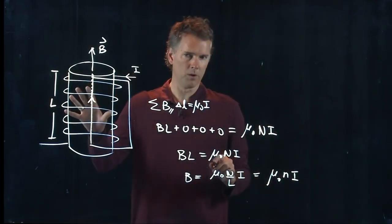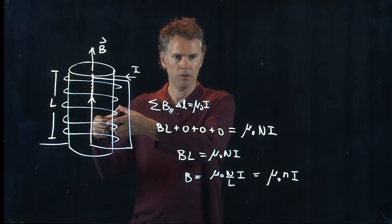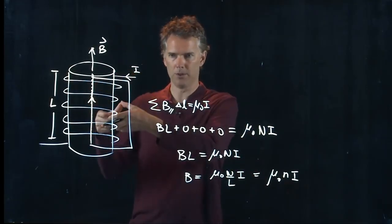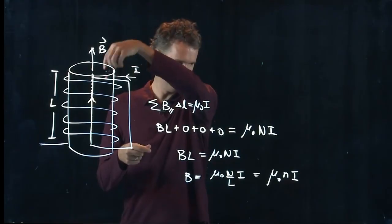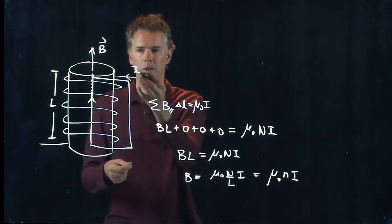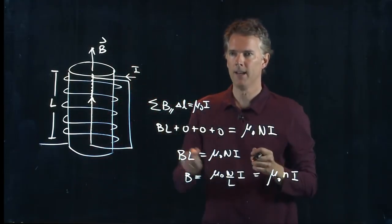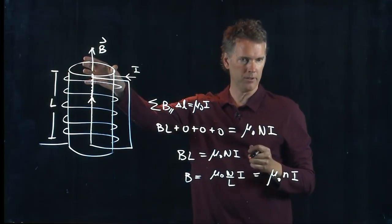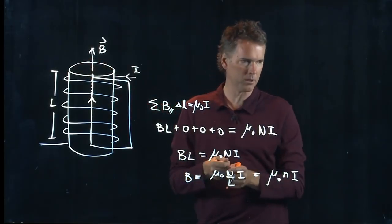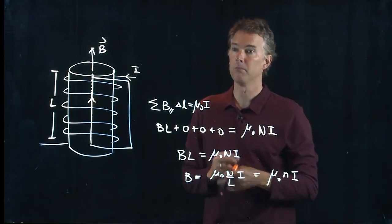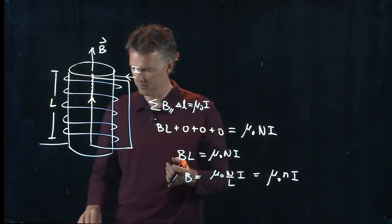These solenoids you can make yourself. Take a tube, an old paper towel tube and wrap a wire around it and then run some current through. Hook it up to a battery. It makes a very strong B field. You can in fact pick up small objects with it. Little metallic objects you can pick up with your homemade magnet. It's kind of cool.